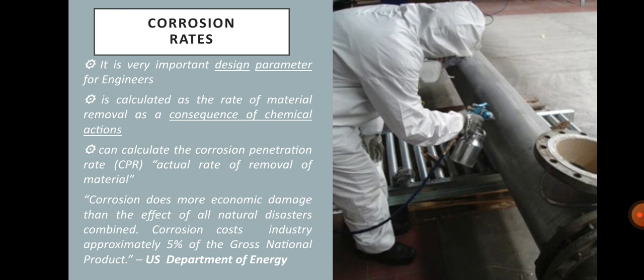According to the U.S. Department of Energy, corrosion does more economic damage than the effect of all natural disasters combined. Corrosion costs industrially approximately 5% of the gross national product.